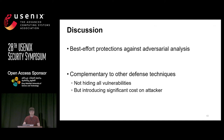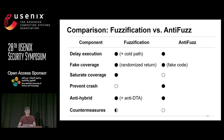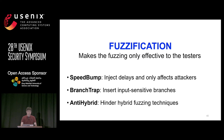Interestingly, the next talk is also about anti-fuzzing. We briefly compared the two approaches: both support delayed execution and fake coverage. Fuzzification additionally supports coverage saturation, while the other supports crash prevention. Both support anti-hybrid features, and fuzzification also considered countermeasures. In summary, fuzzification makes fuzzing only effective for testers using three components: speed bump injects delays, branch trap inserts input-sensitive branches, and anti-hybrid hinders hybrid fuzzing techniques. Thank you.